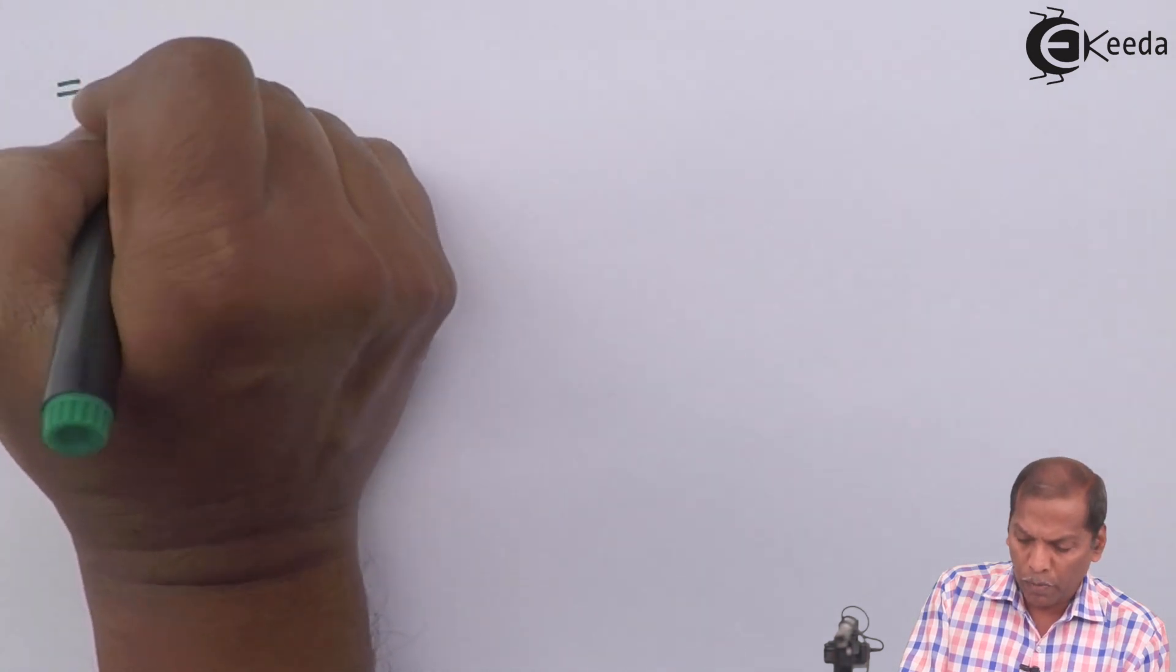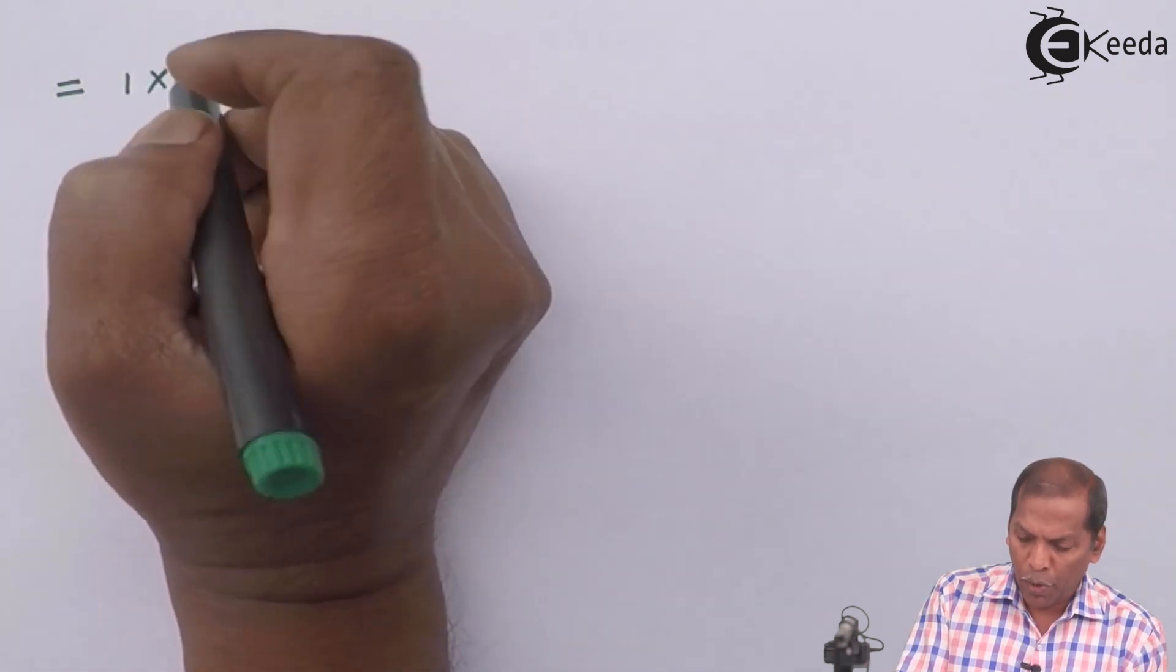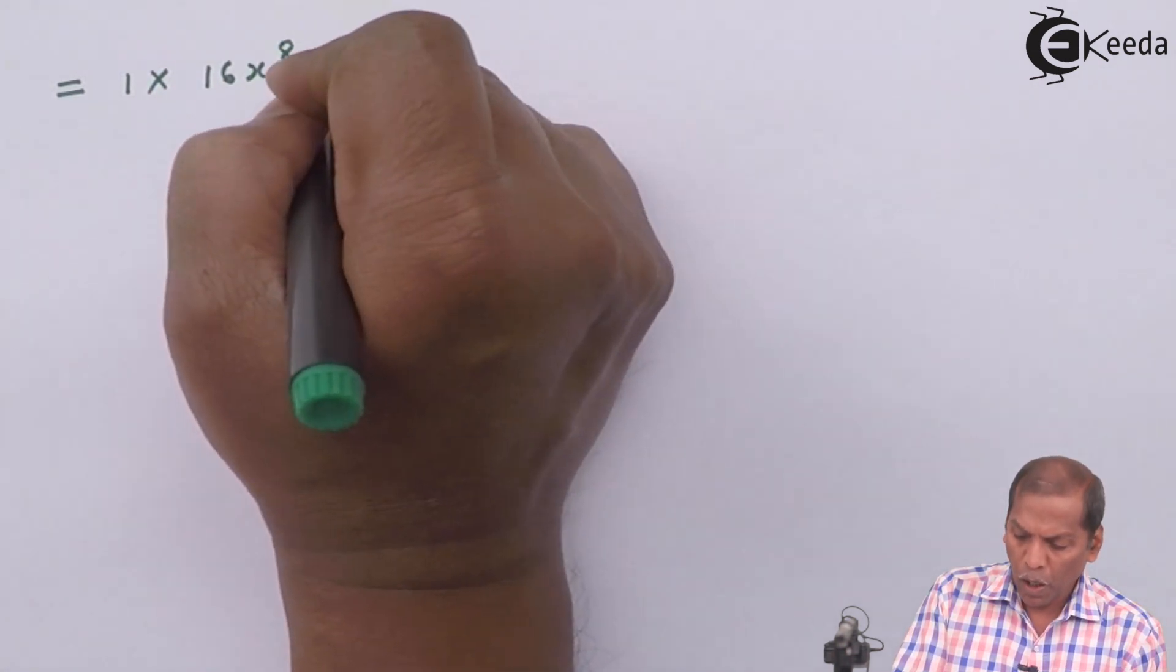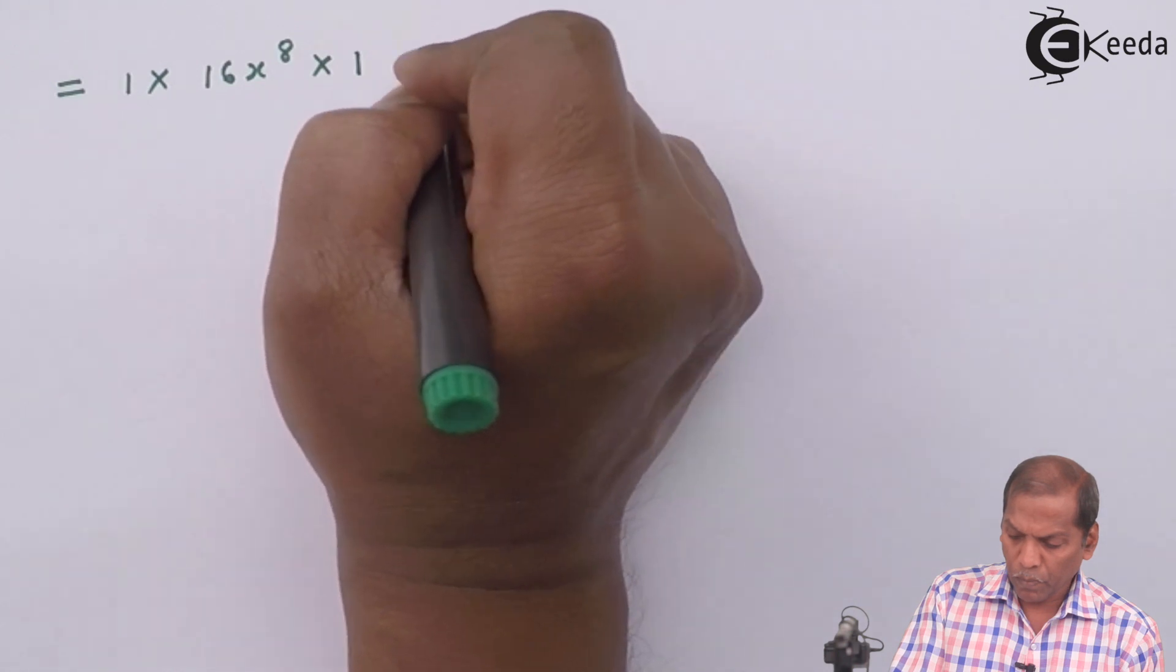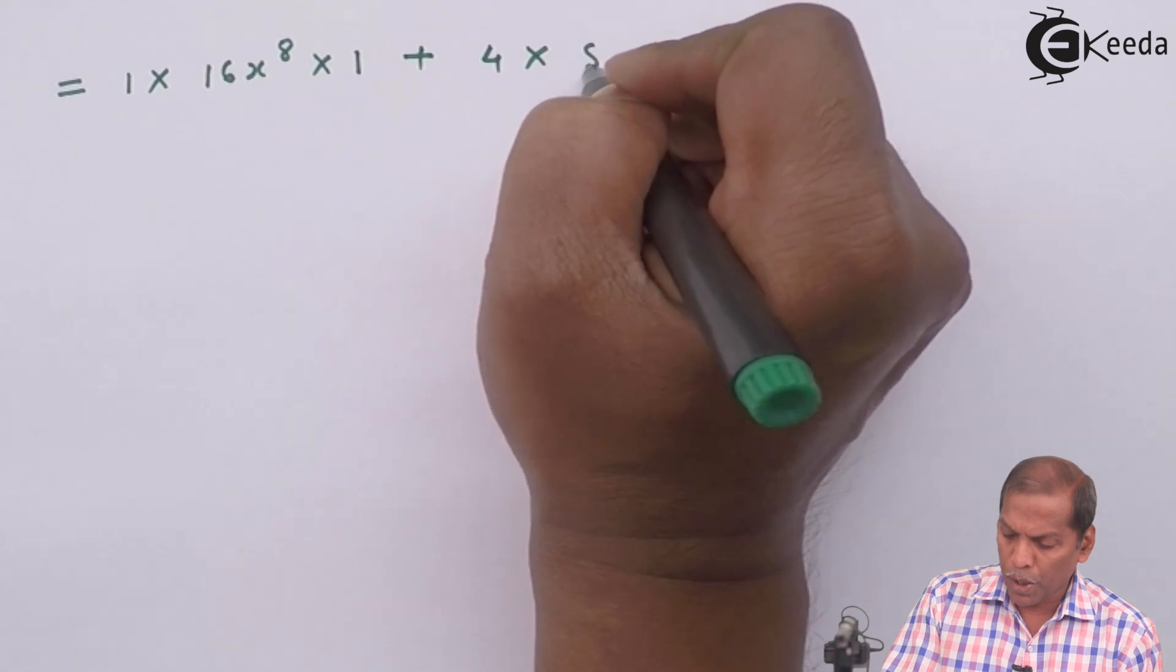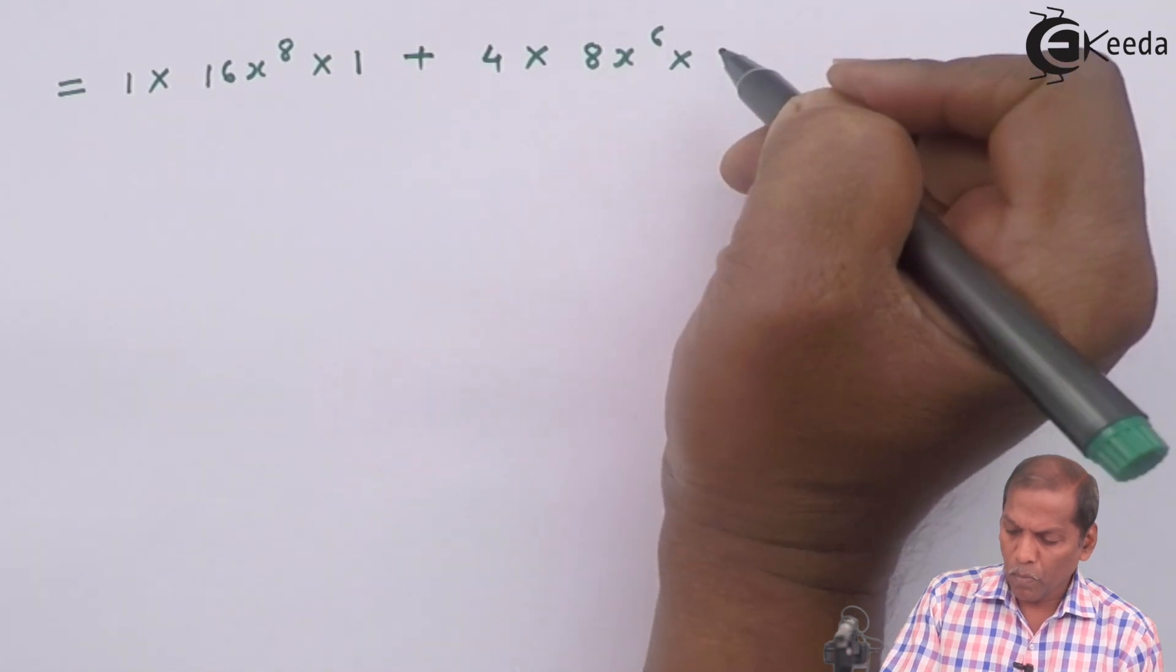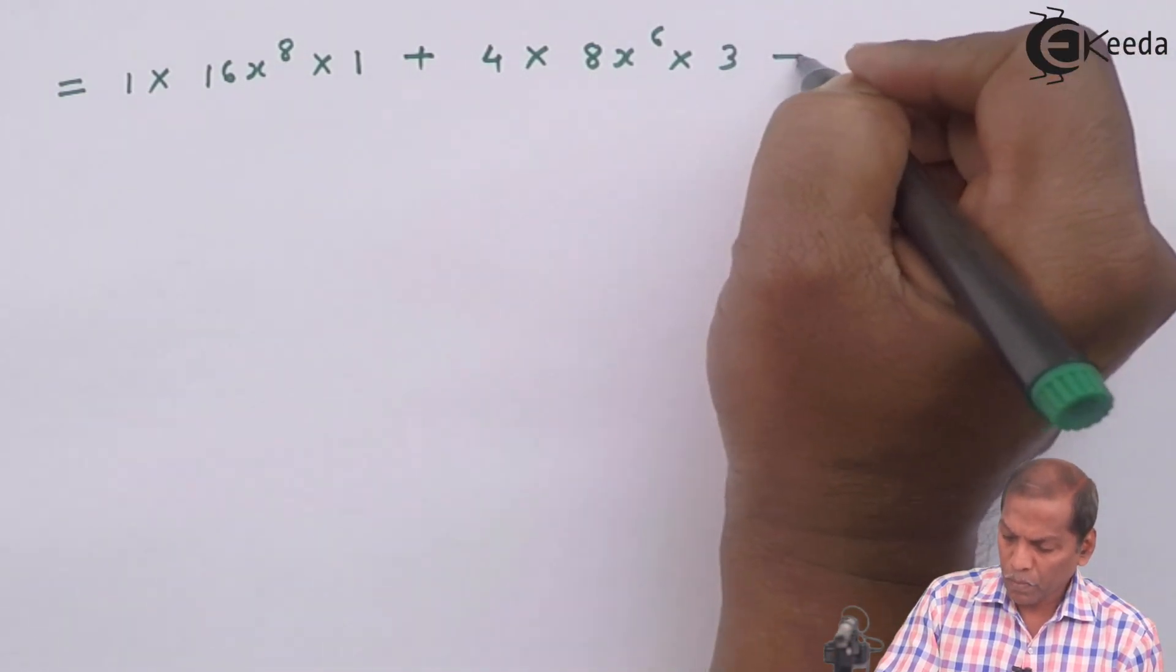On simplifying further, the next step will be: ⁴C₀ gives 1 times (2x²)⁴ that gives us 16x⁸ times 3⁰ that gives us 1, plus ⁴C₁ gives 4 then (2x²)³ that gives us 8x⁶ times 3¹ so that gives us 3, plus